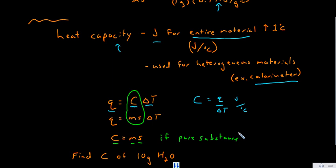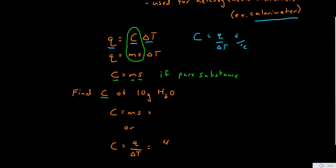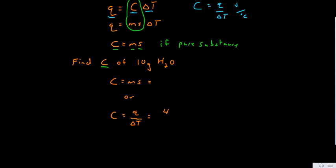So what's the heat capacity of those ten grams of water with the container holding no heat, absorbing no heat? So there's two ways you can find this. You can find it knowing the mass and the specific heat of water. You would just say you have ten grams of water and you know the specific heat of specifically water is 4.184 joules per gram degree Celsius.